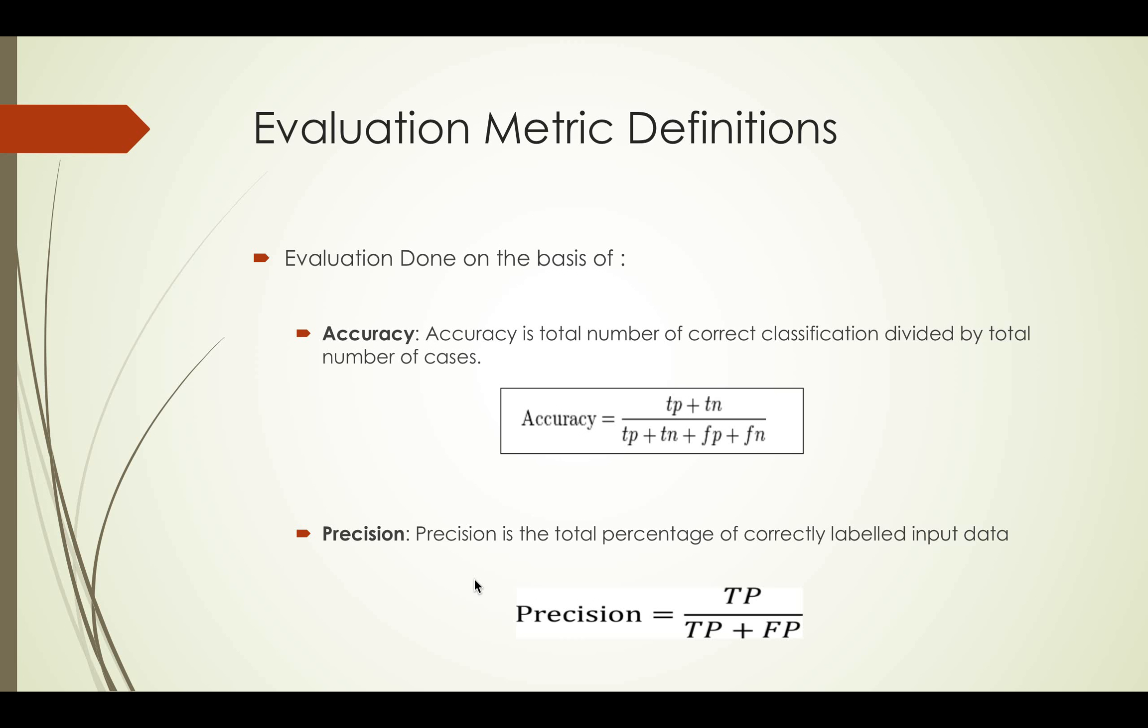Accuracy is the total number of correct classification divided by the total number of cases. It is given by the sum of true positive and true negative upon the sum of true positive, true negative, false positive and false negative.